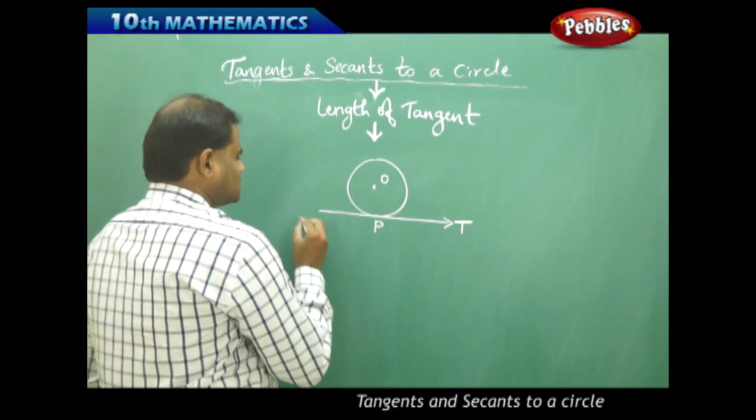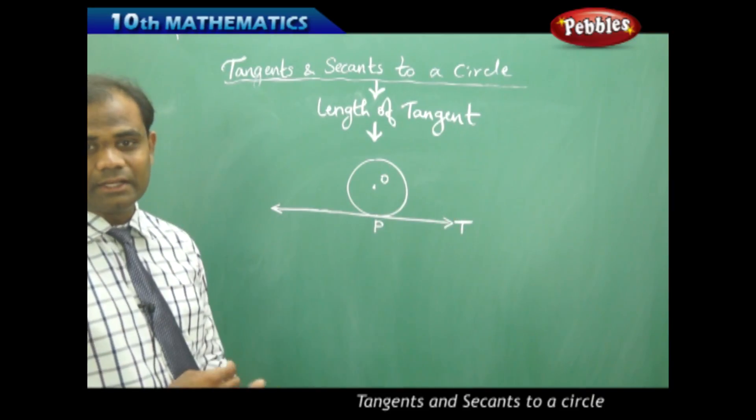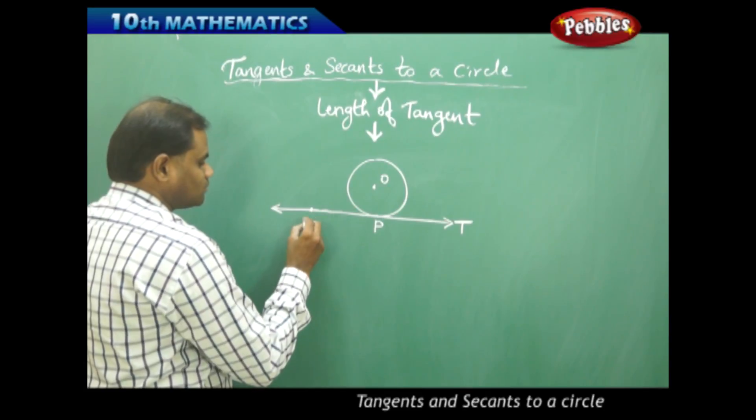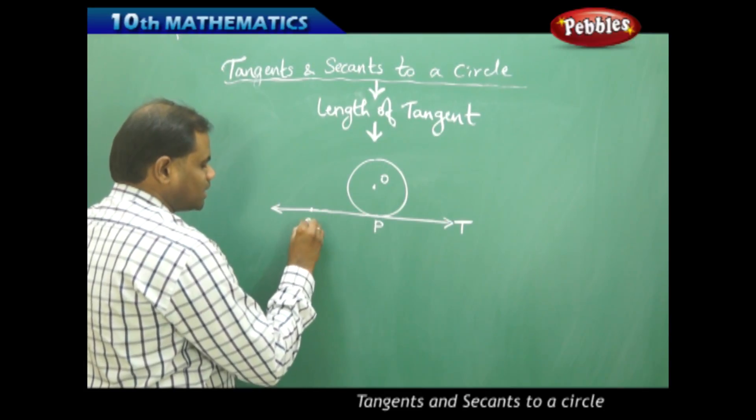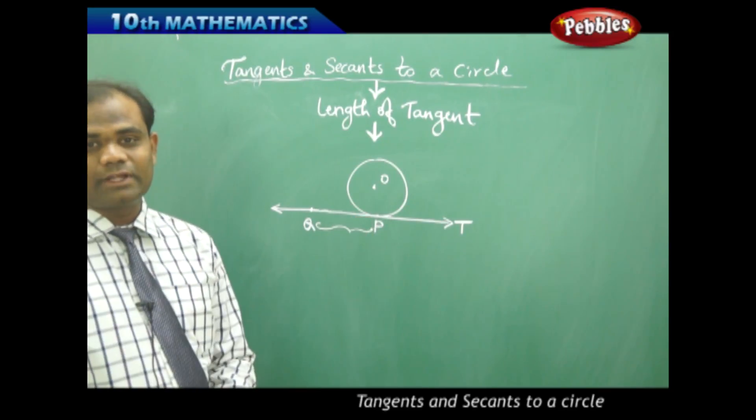Now suppose I have this tangent which extends infinitely on the right and left. Then the length of tangent from say a point Q to the point of contact is said to be the length of tangent.